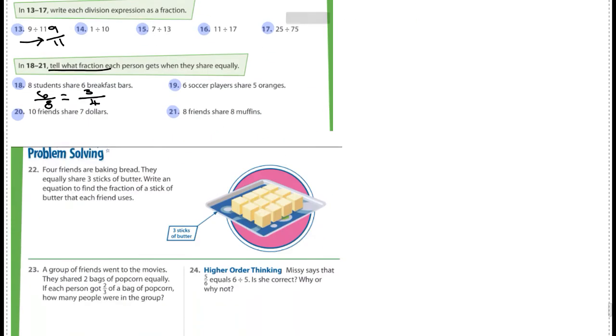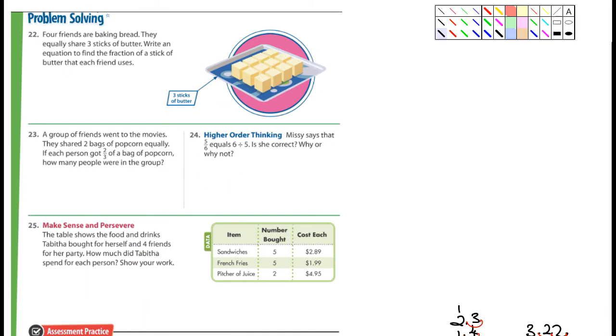It says four friends are baking bread. They equally share three sticks of butter. Write an equation to find the fraction of a stick of butter that each friend uses. So you've got to write an equation. Remember the other day I said an equation always has an equal sign. So it's going to be something divided by something equals something. And that equals, let me just tell you this. What it's going to equal is going to be a fraction. It's going to be something over something. Okay. That's a horrible question mark. That question mark looks like my voice. Just crackly and a mess. Let me write a better question mark. There we go. I feel better. So 23.